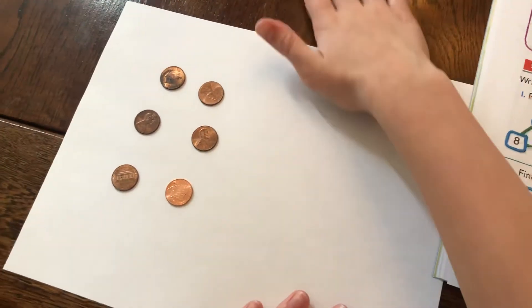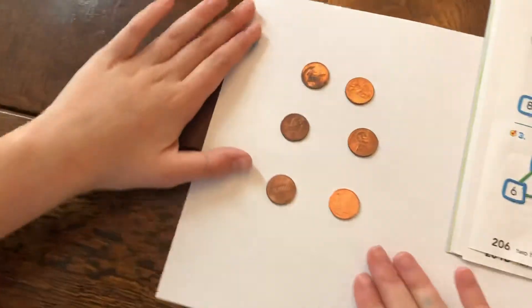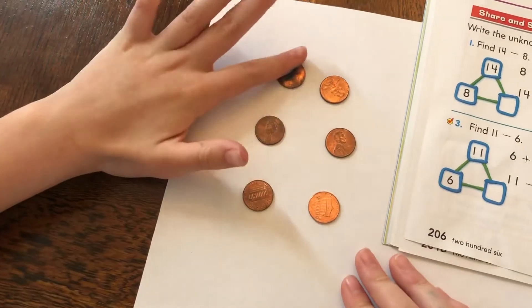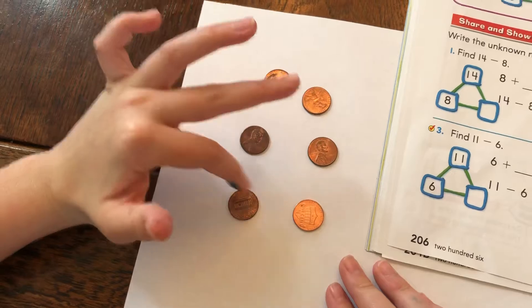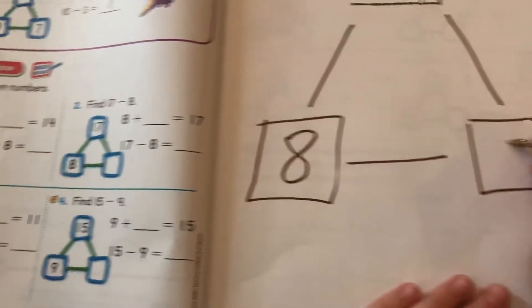Okay. So we took away the 8. We don't need these anymore. Okay. See, we have 1, 2, 3, 4, 5, 6 pennies left. So first, we could write our 6 here.